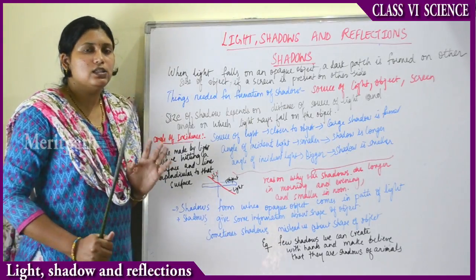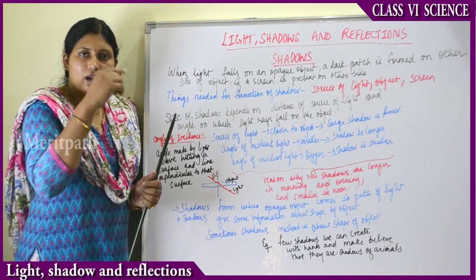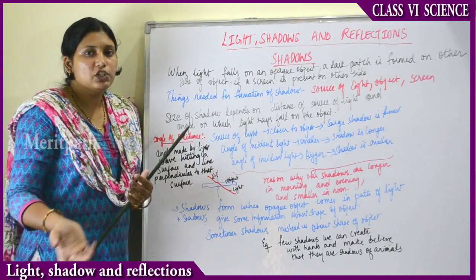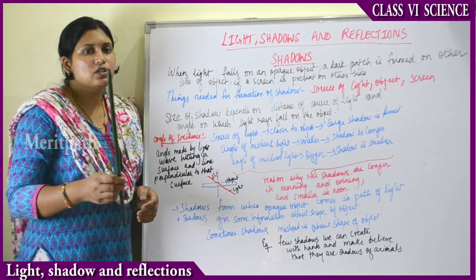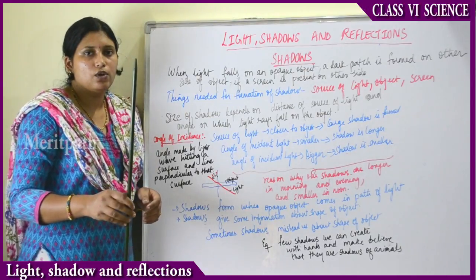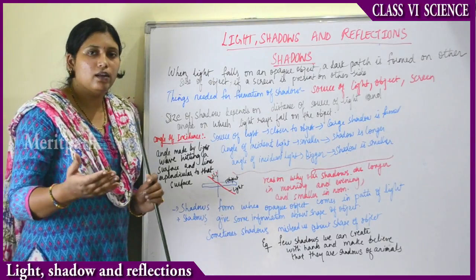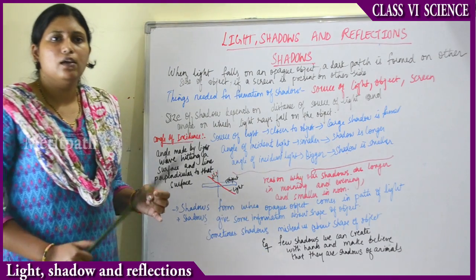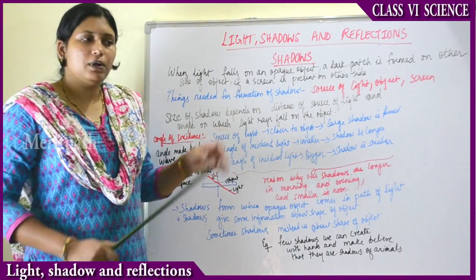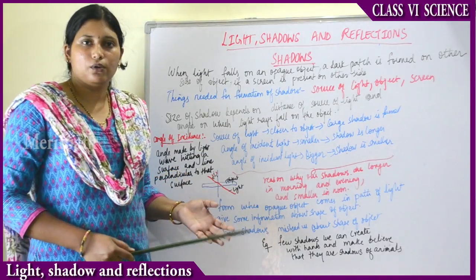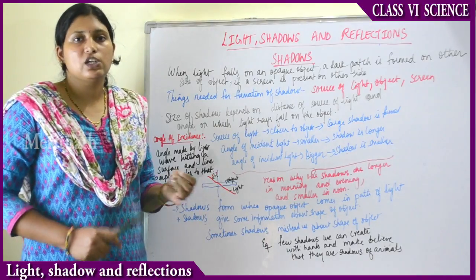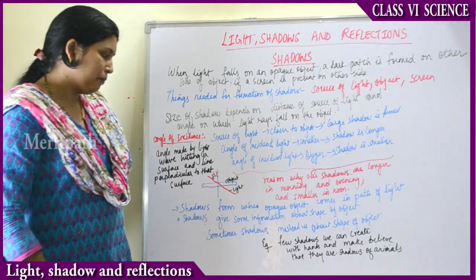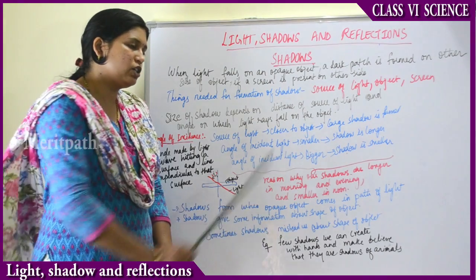If you take a pencil and outline the borders of a shadow on a screen, that gives you knowledge about the shape of the object. Suppose the shadow is of a pointer stick — you can outline it and say this is the stick's shadow. Same way, the shadow of a notebook, a building, or a tree — depending on the shadow you can identify what object it is.